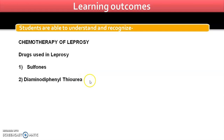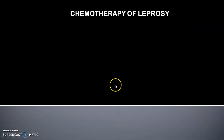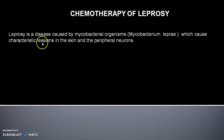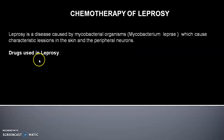The drugs used in leprosy include sulfones, diaminodiphenyl thiorea, rifampicin, chaulmugra, and hydnocarpus oils. Leprosy is a disease caused by Mycobacterium leprae, which causes characteristic lesions in the skin and peripheral neurons. This disease basically affects the skin and peripheral neurons, causing damage to soft tissues and cartilage — sometimes permanently.